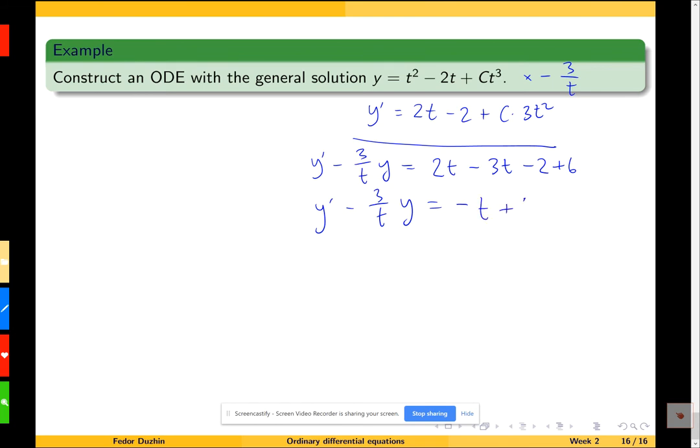Notice that strictly speaking, we know that this logic shows us that every solution of the form y = t² - 2t + Ct³ is going to be a solution of the given differential equation. But we don't know if it is really the full general solution because the differential equation we constructed could have some other solutions too, hypothetically.